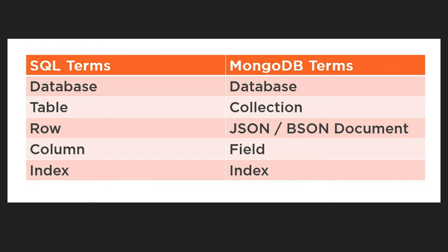Rows in SQL are called JSON or BSON documents in MongoDB. We'll see more about JSON and BSON shortly. Columns are called fields in MongoDB — things like first name, last name, email address. Indexes are still called indexes in MongoDB, just like in relational databases where you have primary keys, unique keys, and other index types.